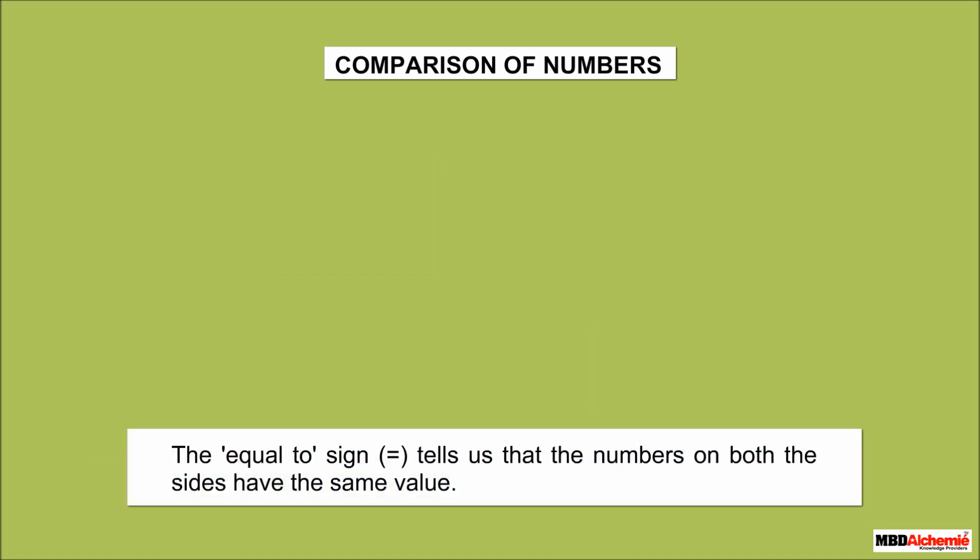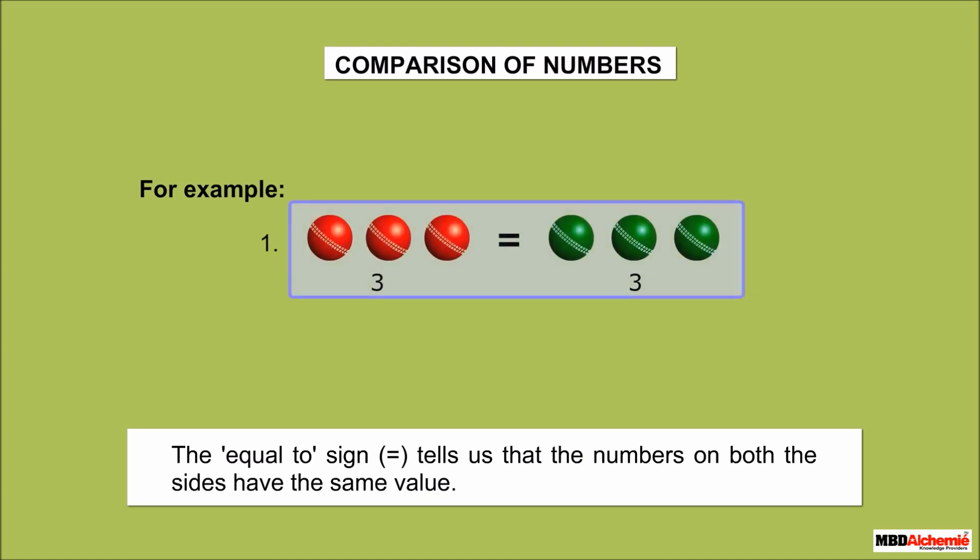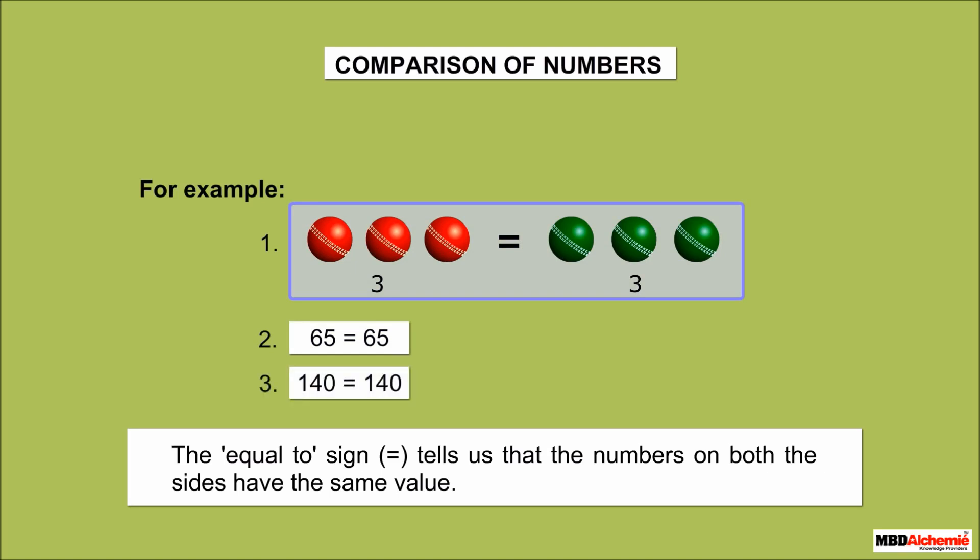The equal to sign tells us that the numbers on both sides have the same value. For example, 3 is equal to 3, 65 is equal to 65, 140 is equal to 140.